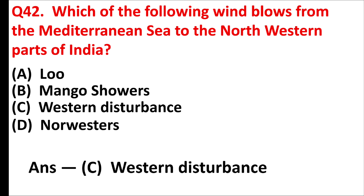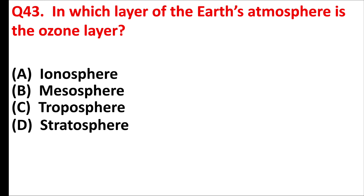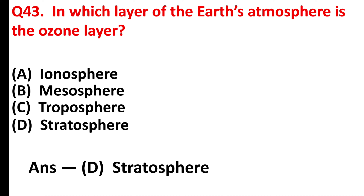Which of the following winds blows from the Mediterranean Sea to the north-western parts of India? Answer is option C: western disturbance. In which layer of the earth's atmosphere is the ozone layer found? Answer is option D: stratosphere.